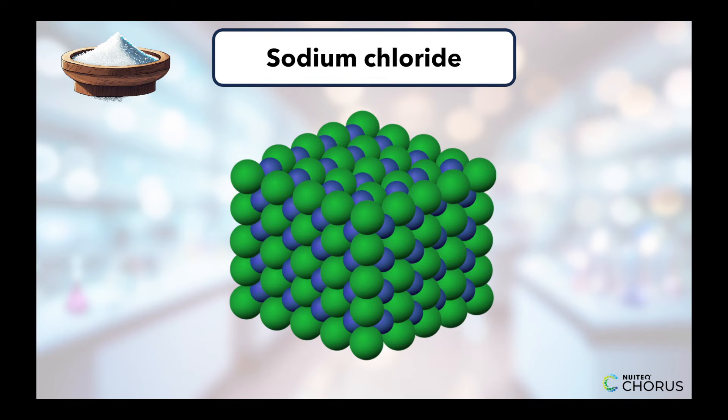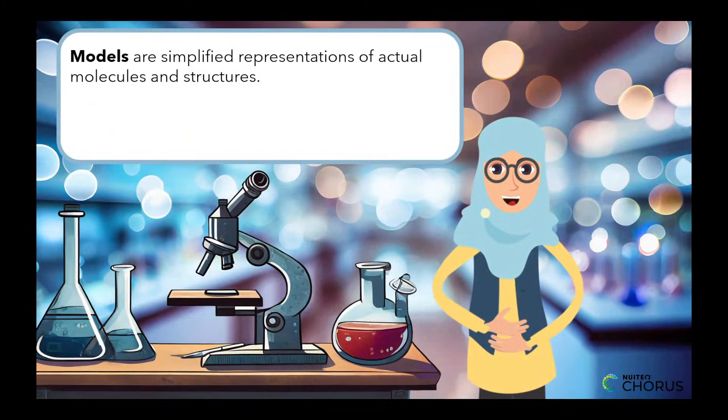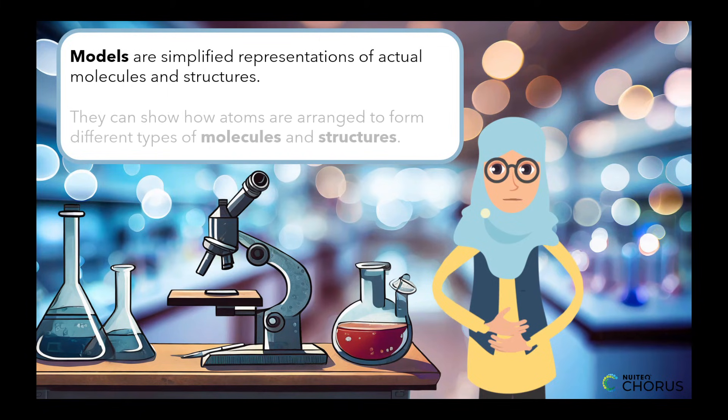It's important to note that these models are simplified representations of actual molecules and structures. But by using them, you can have a general idea of how different types of atoms are arranged to form these different types of molecules and structures.